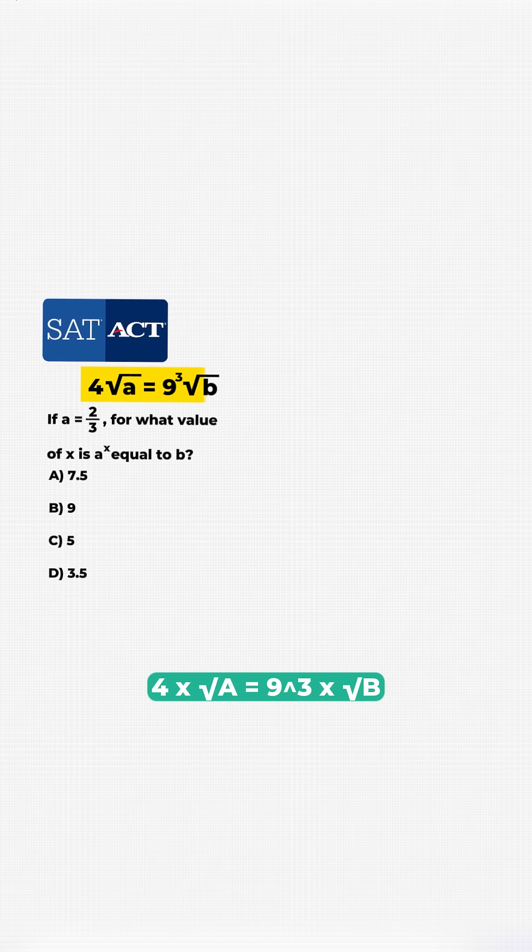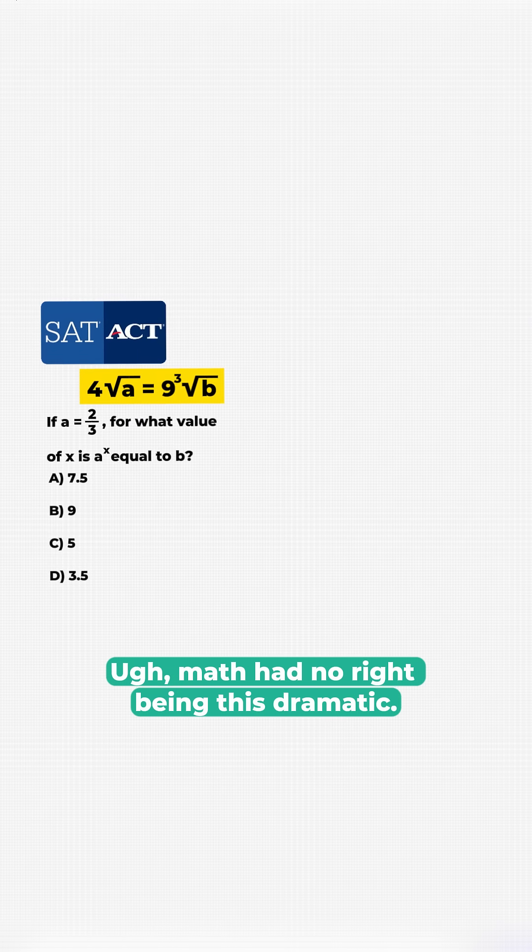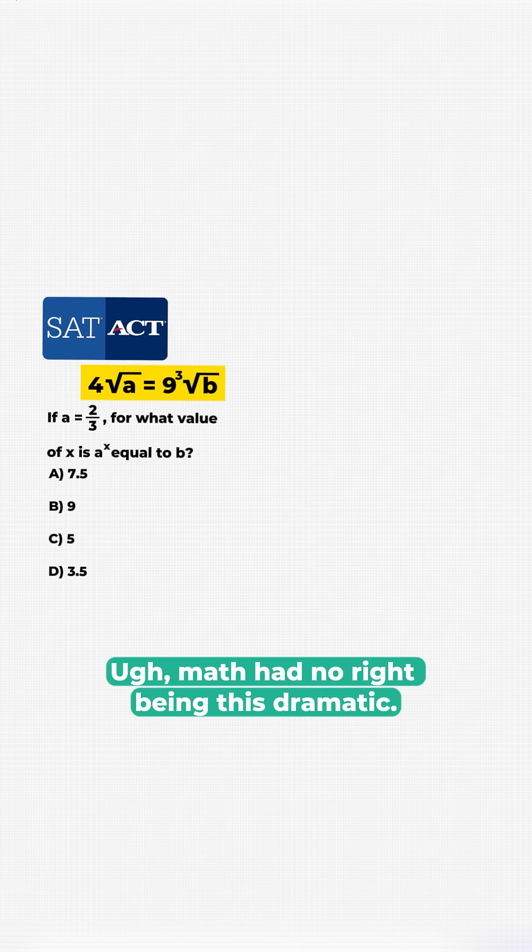Okay, 4 times the square root of A equals 9 to the power of 3 times the square root of B. First reaction? Ugh, math had no right being this dramatic. Let's break it down.